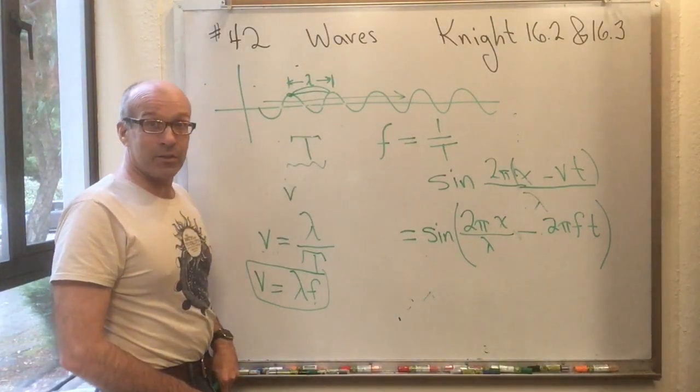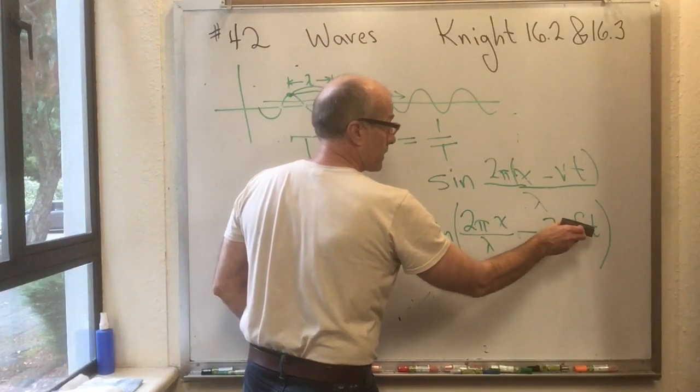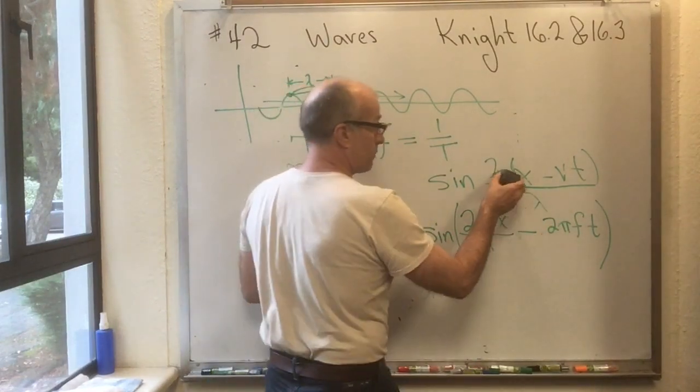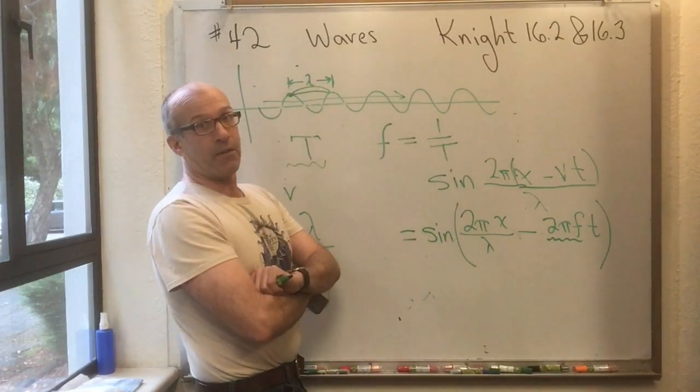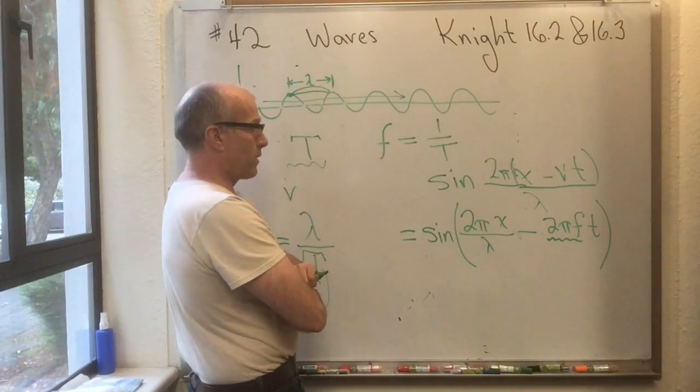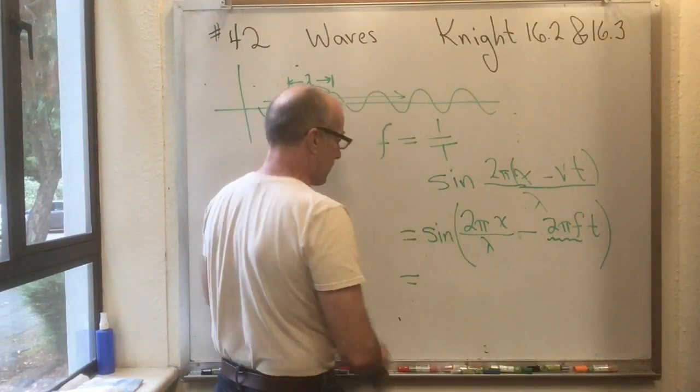Okay, now all of a sudden 2 pi F has appeared. See, V over lambda was F, but this 2 pi that's out front here is combined with that to make a 2 pi F. As soon as 2 pi F occurs here, all of a sudden you're going, oh my gosh, 2 pi F, we have a name for that. That's the angular velocity.